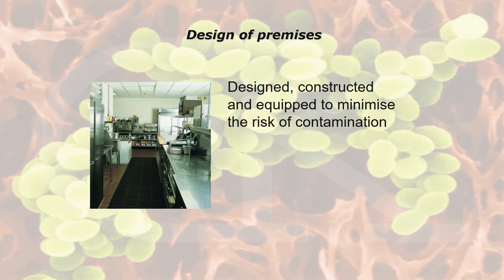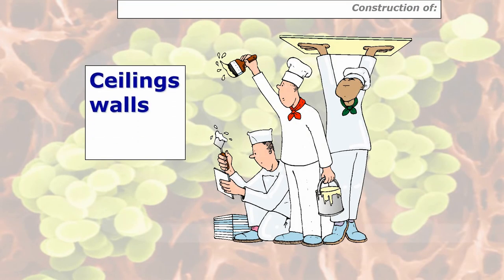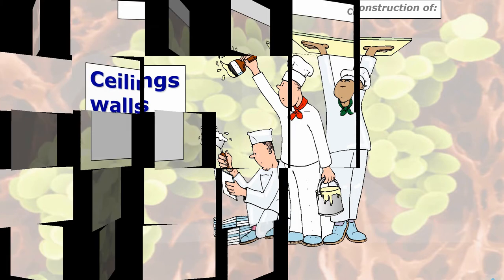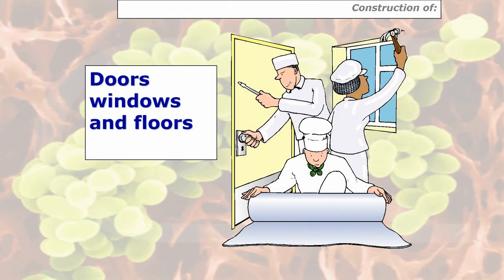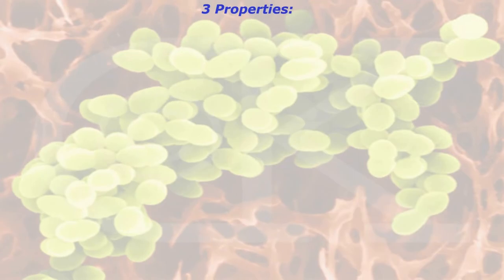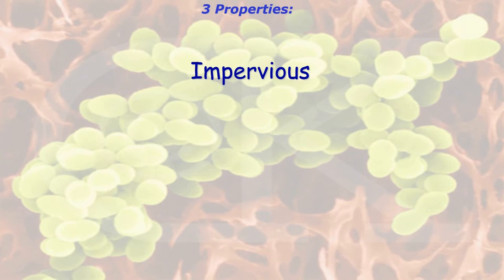With the design of food premises, they must be designed, constructed and equipped to minimize the risk of contamination. With the ceilings, walls, doors, windows and floors, they must be constructed of materials that have three particular properties. They must be impervious — that means they don't absorb any moisture. Finishes such as plastic or metal, but not softwood for example, are classed as impervious materials.